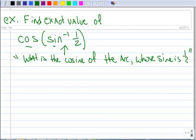This part in here is the inverse sine. So it says there's an arc whose sine is 1 half. And then this says, what is the cosine of that arc?